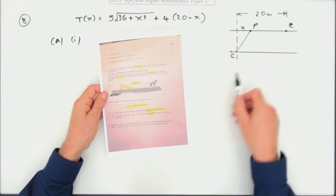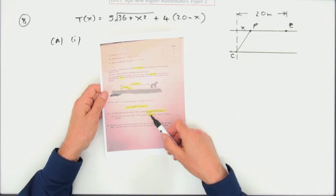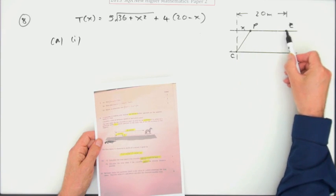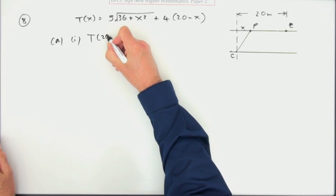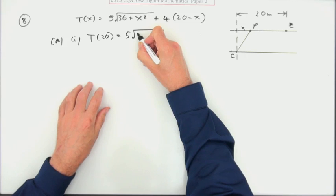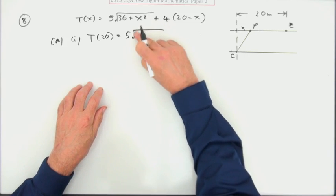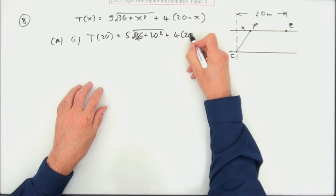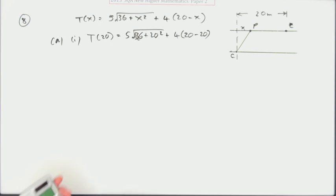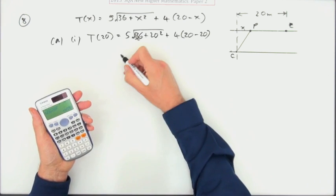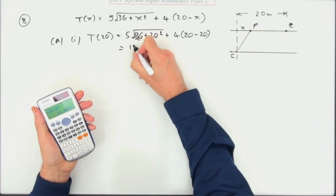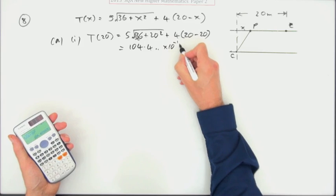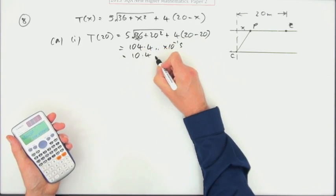Calculate the time it takes if it does not travel on land. If it does not travel on land, it means it's going straight across the water, so x is 20. So it'll be 5 times the square root of 36 plus 20 squared, plus 4 times 0. That part comes to 104.4, but those are tenths of a second, so 10.4 seconds.